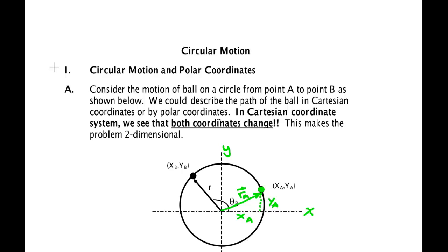There is nothing wrong with that. We could watch as the ball moves around this curved path to a new place, say position B. When it gets to position B, it will have a new position vector R sub B, and it will have a new X coordinate and a new Y coordinate. Because both the X and the Y coordinates change, we will have to solve two equations — one equation for X, one equation for Y.